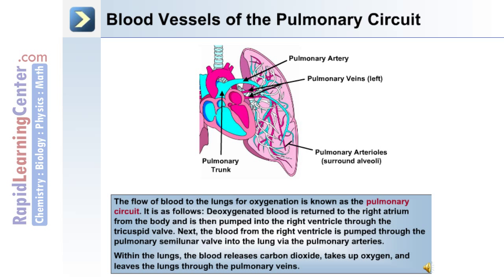Deoxygenated blood is returned to the right atrium from the body and is then pumped into the right ventricle. This blood from the right ventricle is pumped through the pulmonary semilunar valve into the lung via the pulmonary arteries. Within the lungs, the blood releases carbon dioxide, takes up oxygen, and leaves the lungs through the pulmonary veins.